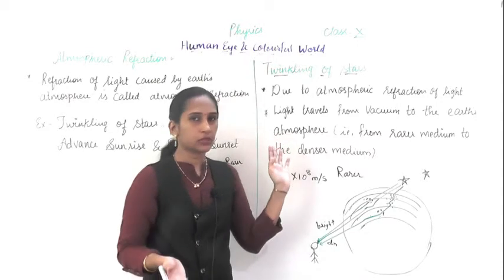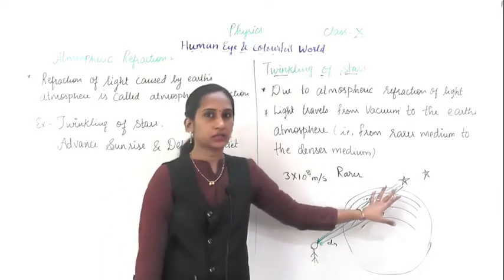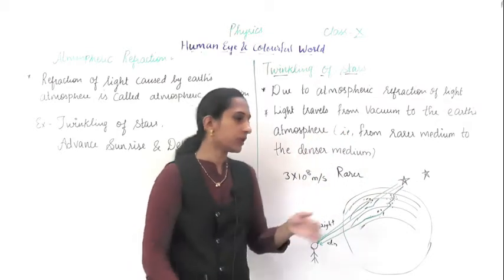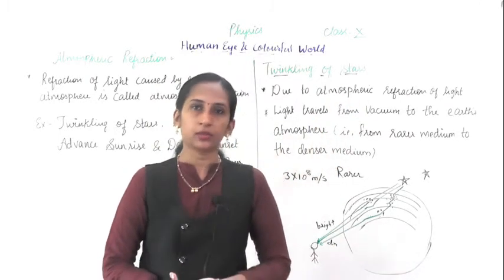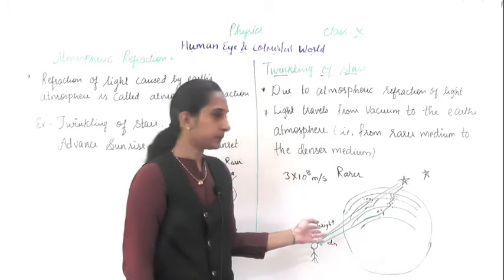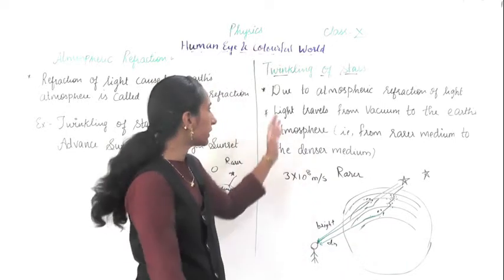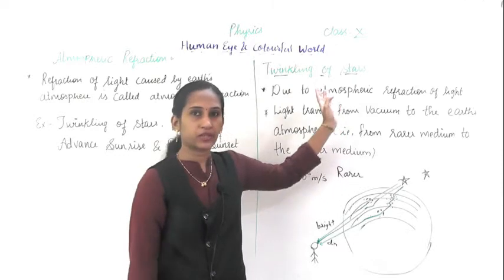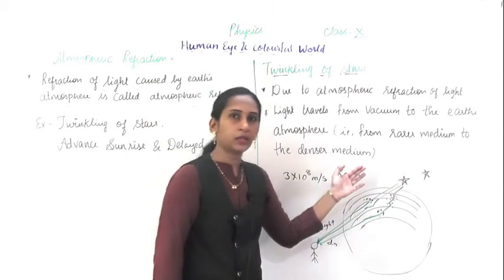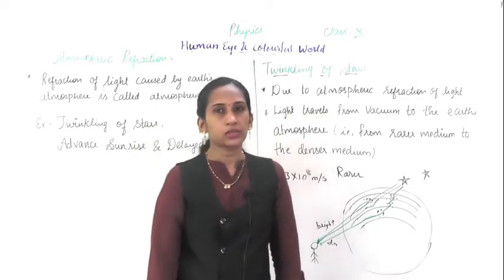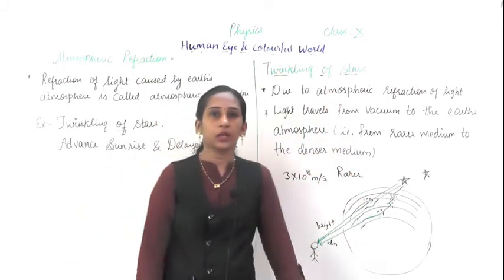That phenomenon is called twinkling. The star is emitting continuously but because of air density the light cannot reach continuously to our eyes, and you see a twinkling sensation about the stars. This is a simple concept - it is a rarer medium in space, light enters into earth's atmosphere which is the denser medium, so there is bending. This is why twinkling of stars occurs - it is due to the atmospheric refraction of light. Light travels from vacuum to earth's surface, from rarer medium to denser medium, crossing many atmospheric layers.